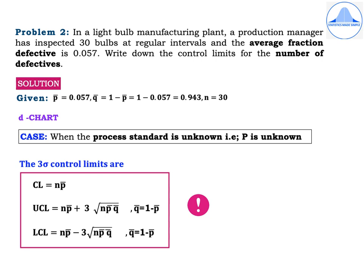Problem 2: In a light bulb manufacturing plant, a production manager has inspected 30 bulbs at regular intervals and the average fraction defective is 0.057. Write down the control limits for the number of defectives. Here, a sample of 30 bulbs is chosen and the average fraction defective is given. This is a case where the process standard is unknown, so we use P-bar as an estimate. Given: P-bar = 0.057, Q-bar = 1 − 0.057 = 0.943, and n = 30.